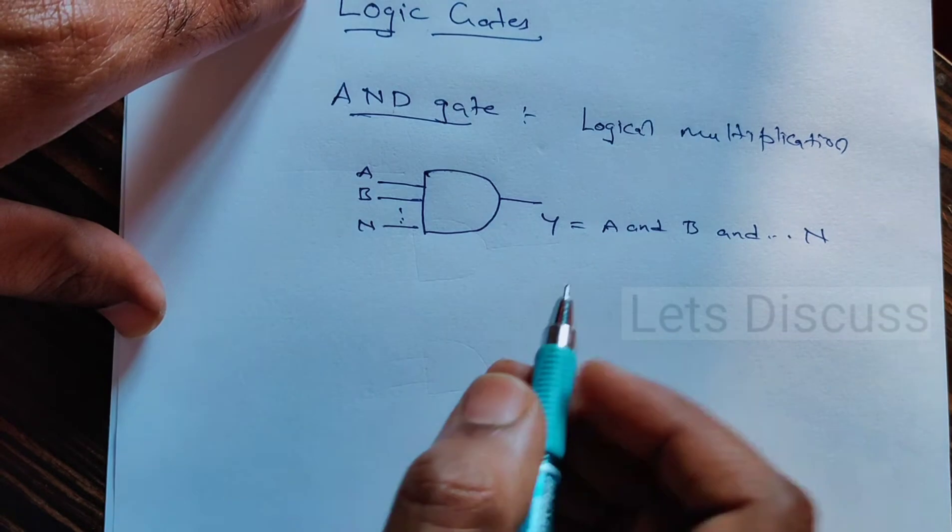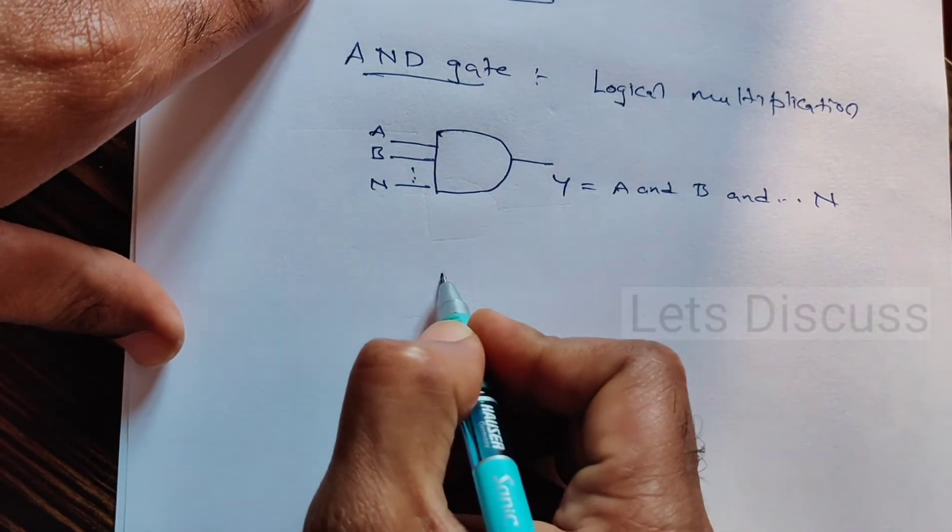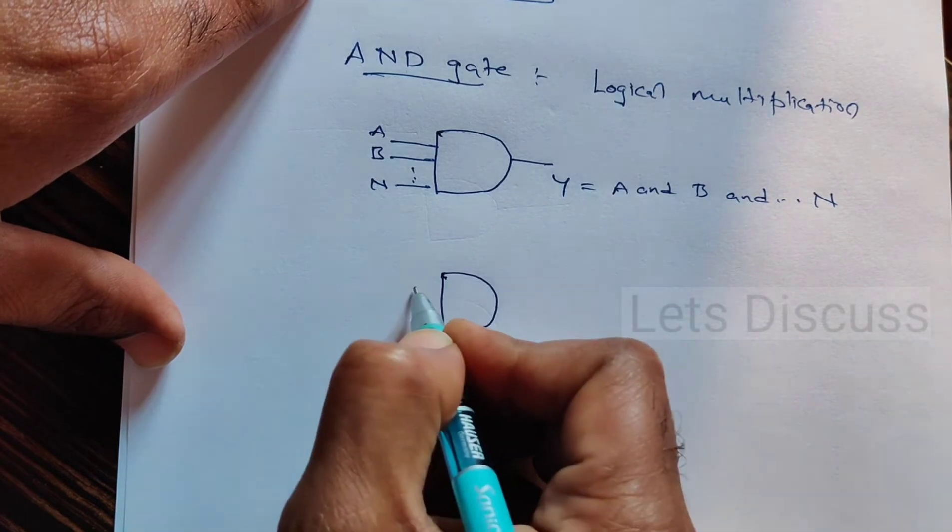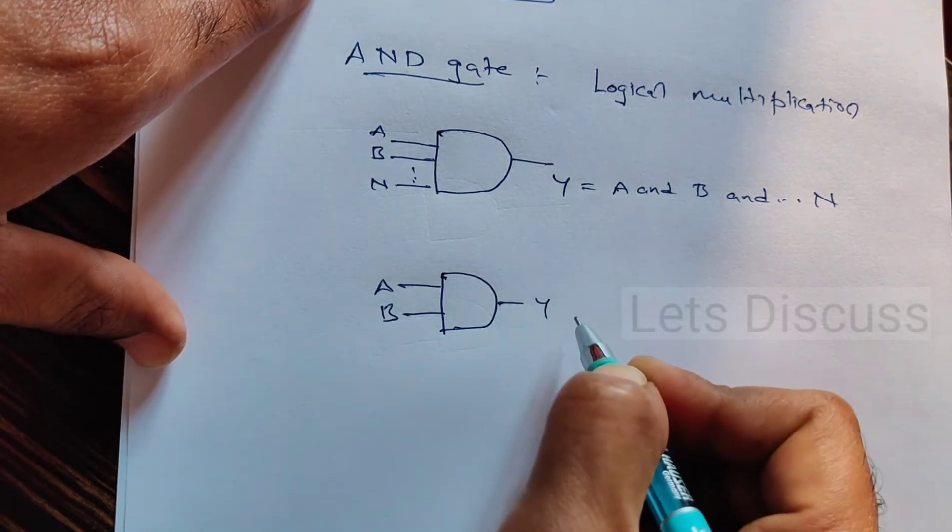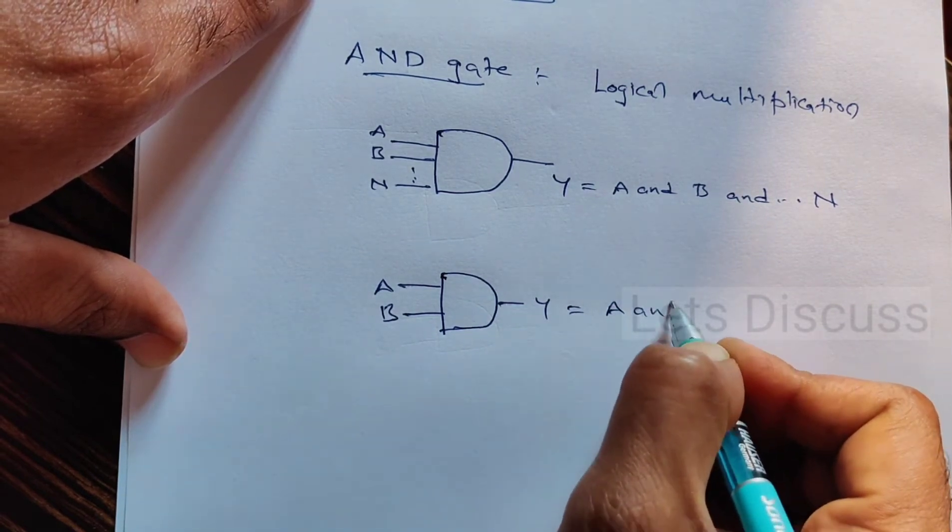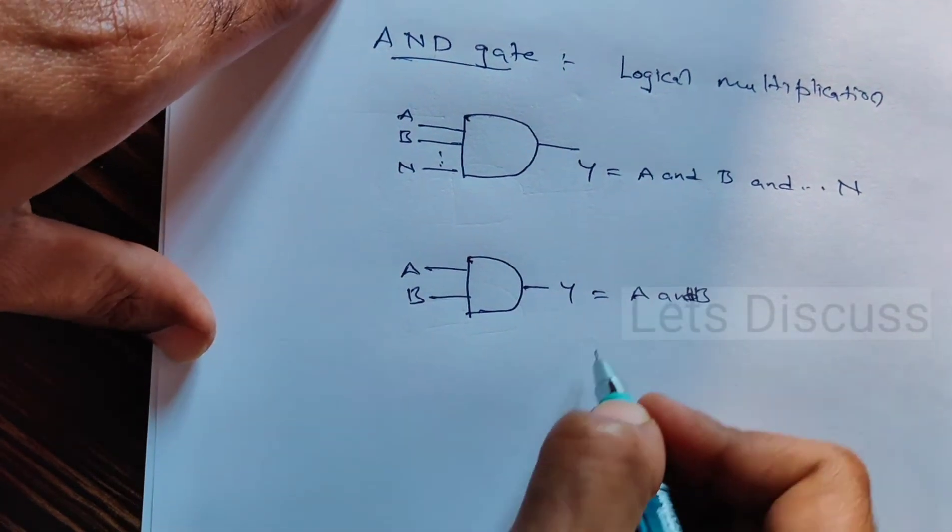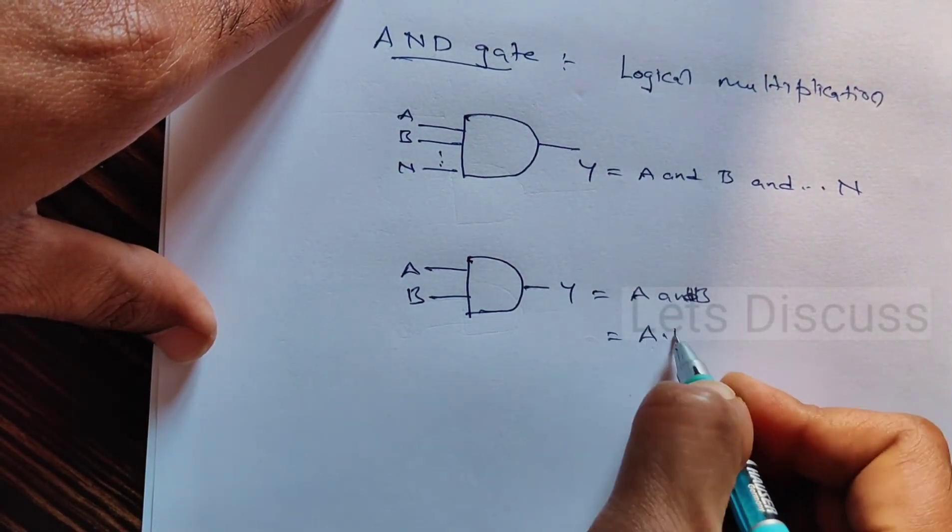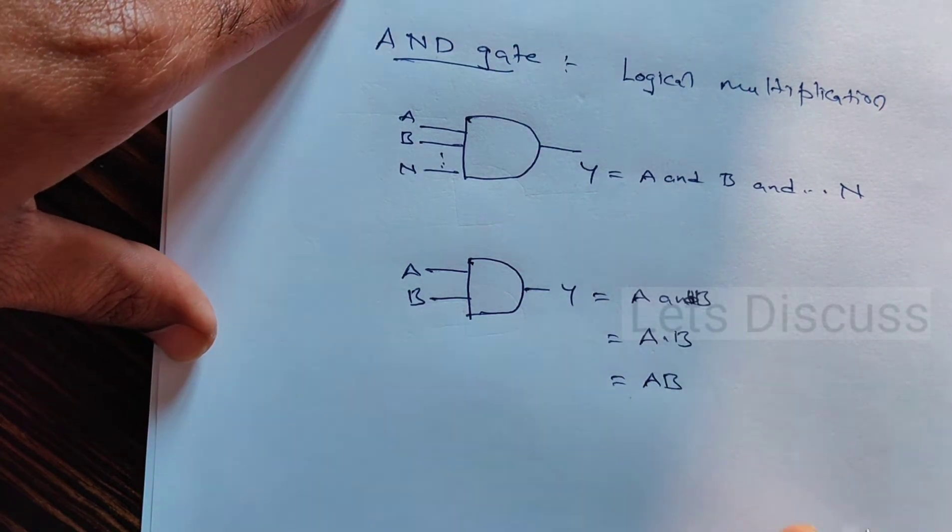I am taking here a two input AND gate whose output is A and B, which can be written as A dot B, or also just AB.